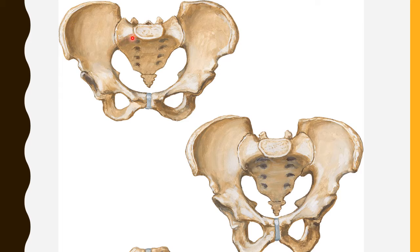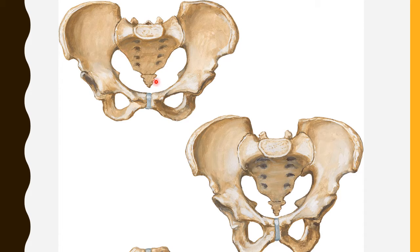The arcuate line separates the bony pelvis into two parts: the upper part is called the greater pelvis or false pelvis, and the lower part is known as the true pelvis or lesser pelvis. Between these two, we can identify an inlet — the pelvic inlet. When you turn the pelvis upside down, we can identify the pelvic outlet.